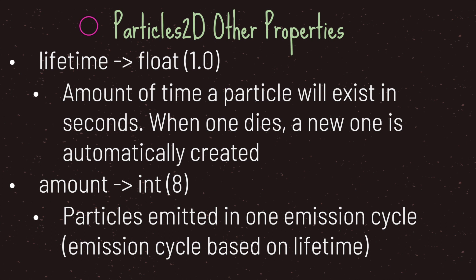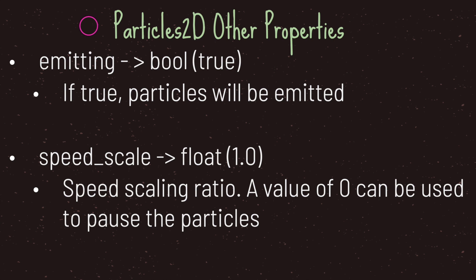The first additional property is lifetime, set to the float value one. The lifetime property is the amount of time a particle will exist in seconds — by default, each particle lives for one second, and when one particle dies, a new one is automatically created. The amount property is how many particles are emitted in one emission cycle, where each cycle is based on the lifetime value. By default, eight particles are created over the lifetime of one second. The emitting property is set to true by default, and if true, particles will be emitted — you need this set to true for your particle system to show to the player.